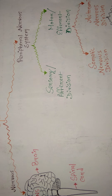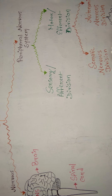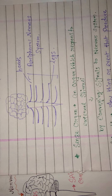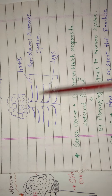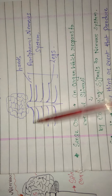Looking at the diagram, this is the central nervous system, and the nerves on the two sides of our body are called the peripheral nervous system.